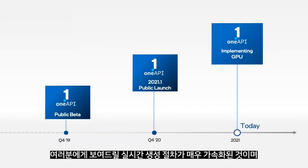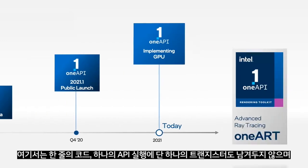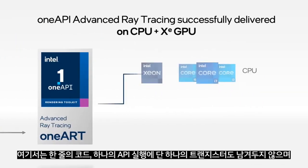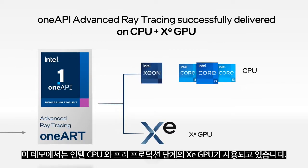What's new and exciting is that we'll show you this live creation process was significantly accelerated through combining the concepts and implementation of the cross-platform, cross-architecture OneAPI software initiative, announced just two years ago — now delivered here with no transistor left behind, single code and single API execution on Intel CPUs and a pre-production XE GPU.